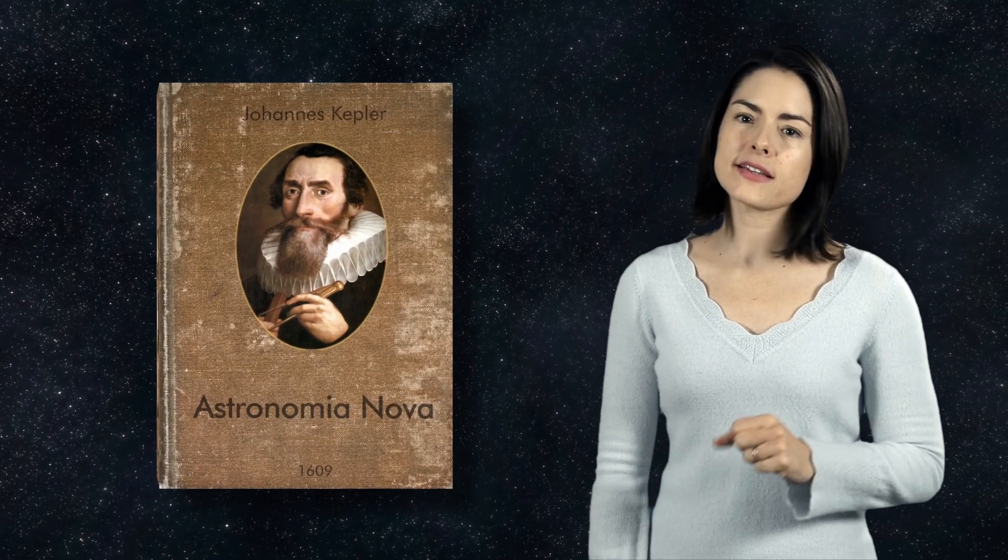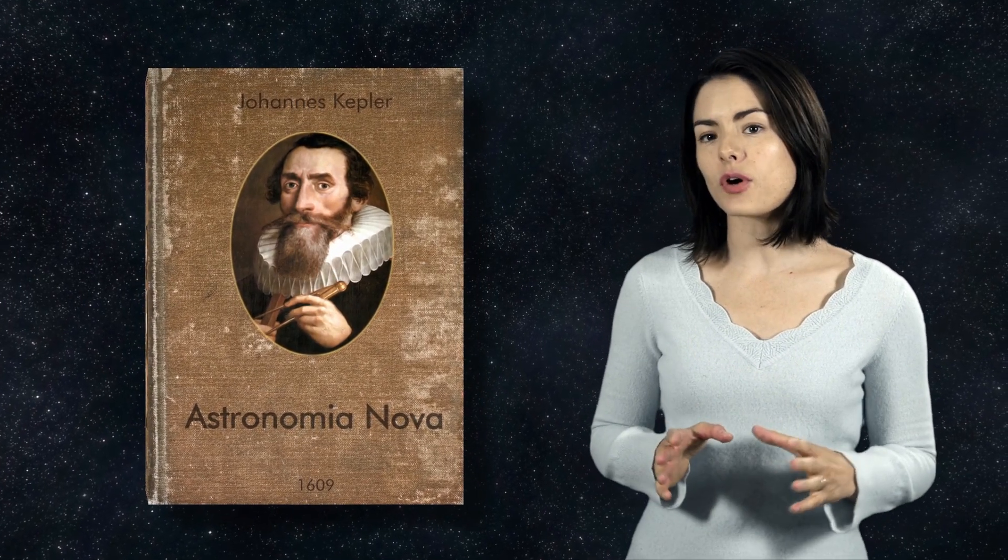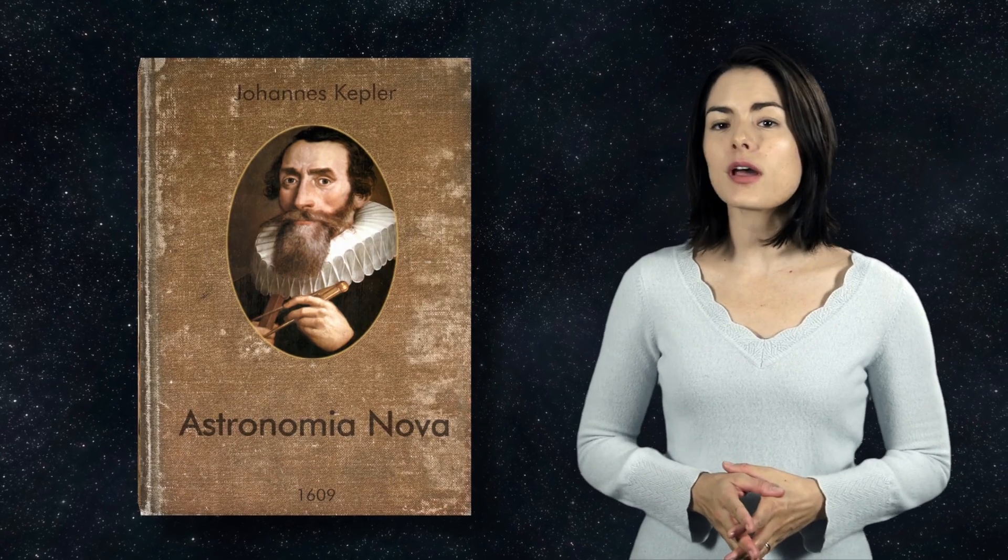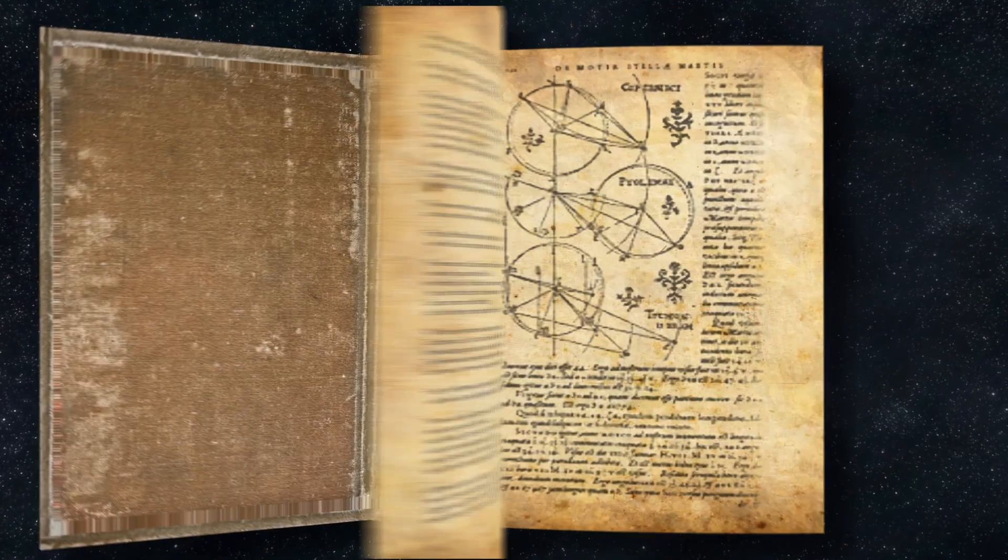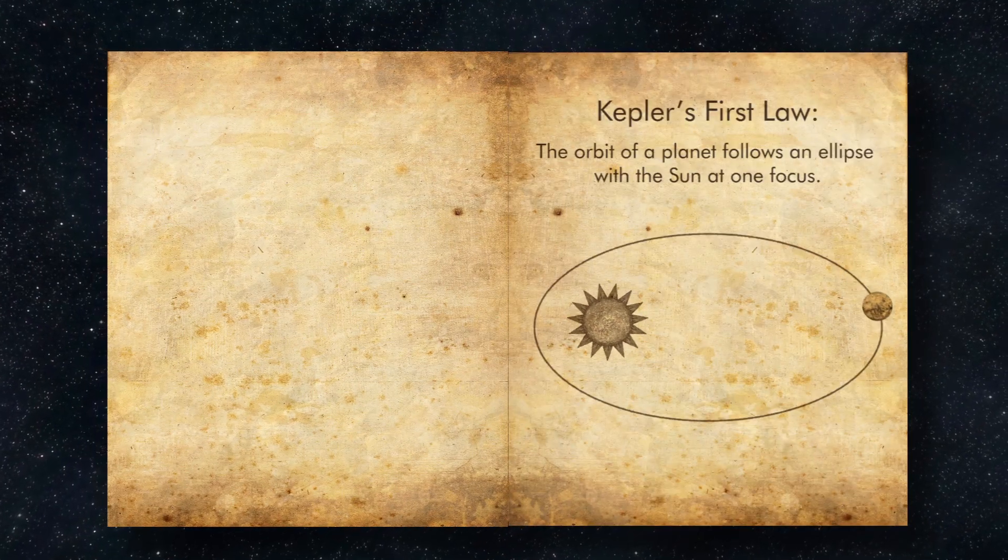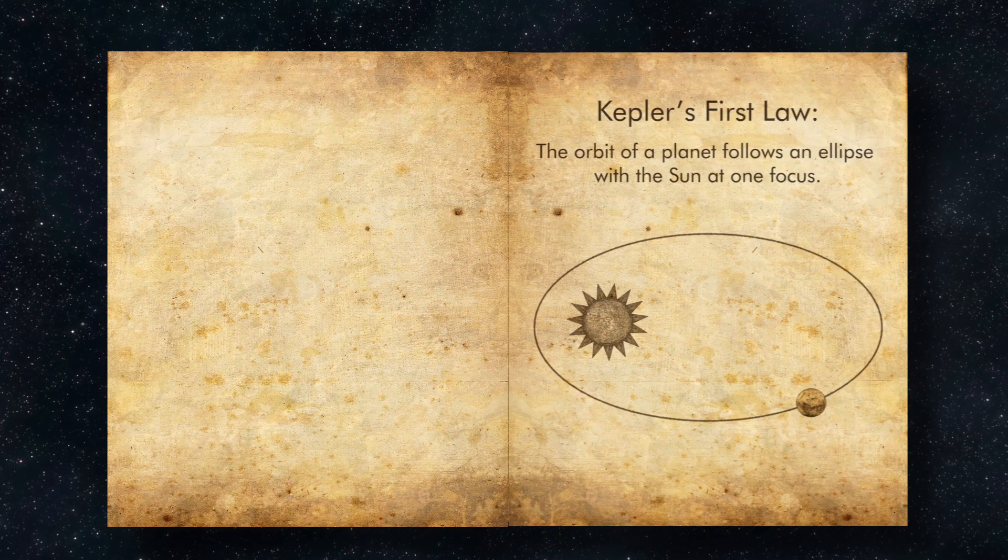Kepler's first and second laws of planetary motion appeared in their earliest form in 1609 in the book Astronomia Nova. They state that, one, planets move in elliptical orbits about the Sun, which sits at one focus.